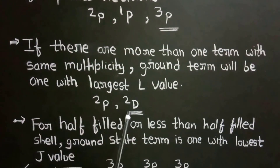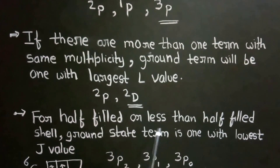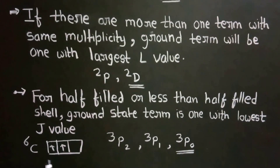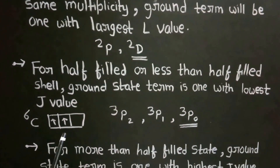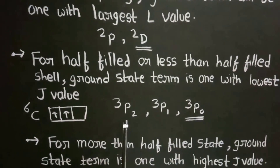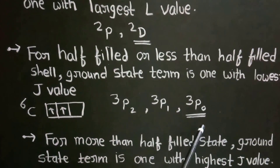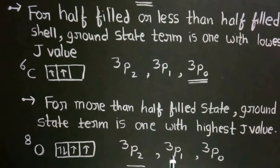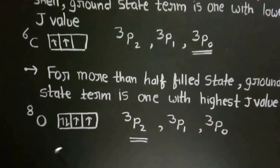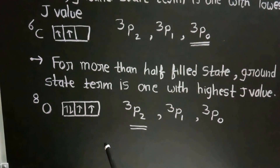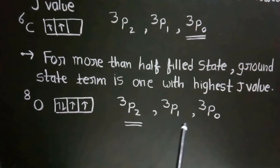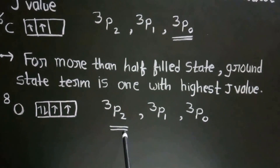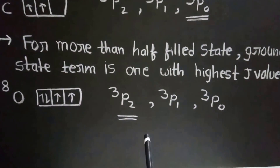For a half-filled shell or less than half-filled shell, the ground state term is the one with the lowest J value. For example, in carbon there are 2 electrons in the p subshell, so it is less than half filled. Among the terms 3P2, 3P1, and 3P0, the ground state term is 3P0. For more than half-filled shells, the ground state term is the one with the highest J value. For example, in oxygen there are 4 electrons in the p subshell, so it is more than half filled. Among 3P2, 3P1, and 3P0, the ground state term is 3P2.